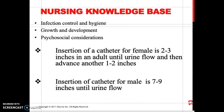Regarding infection control and catheter insertion: insertion of a catheter for a female is about two to three inches in adults, and after you see urine flow, advance it another one to two inches. Insertion of a catheter for a male is seven to eight inches until urine flow, and you can advance it another inch more.